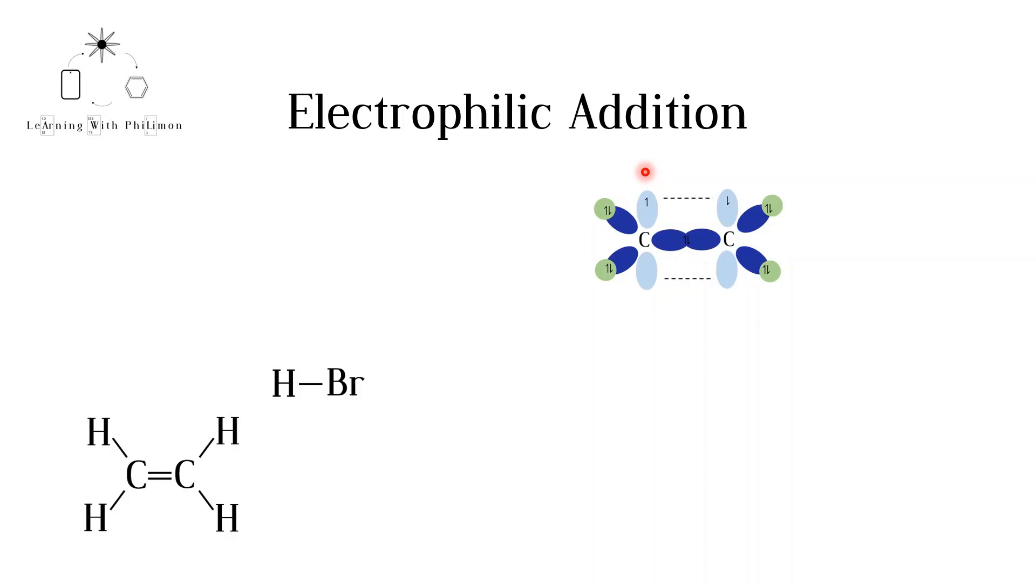The electrons involved in the pi bond are relatively far from the nuclei and therefore experience a weaker attraction to the nuclei. Pi bonds break more easily than sigma bonds. If the pi bond breaks, these electrons can be used to form a new bond. This is why alkenes are more reactive than alkanes. Alkanes are sp3 hybridized and therefore contain only sigma bonds. Sigma bonds are harder to break.